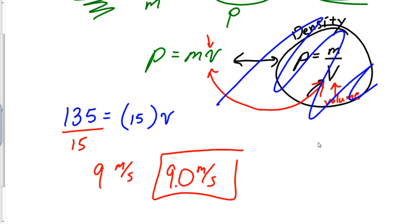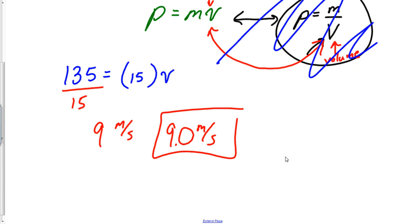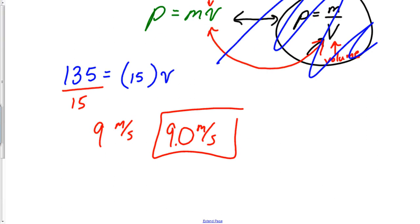Let's do one more equation. I love this problem. Here you've got a baseball, obviously it's asking you to find force. Here, let's just do something: 0.25, that's a mass. Then we've got this baseball going 100 miles per hour.